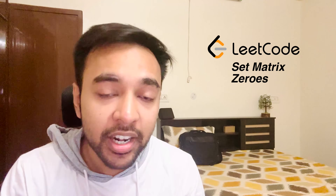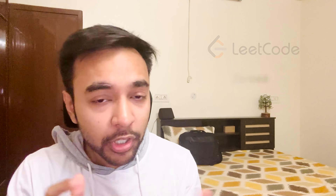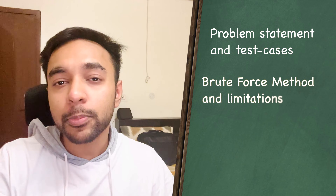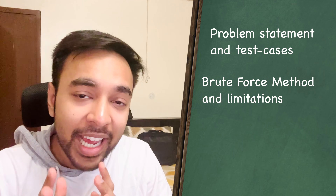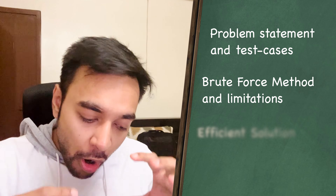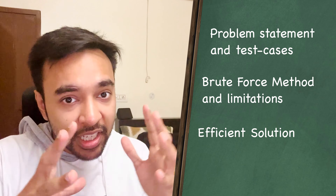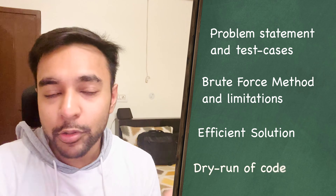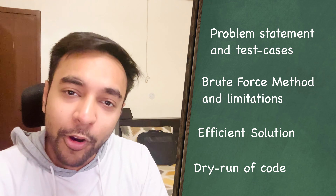Today's problem is Set Zeroes in a Matrix on LeetCode. You're given a matrix and you have to set zeros in rows and columns based on a certain condition. Hello friends, welcome back to my channel. I will explain the problem statement and we will look at some sample test cases. Going forward, we will try a brute force approach and see its limitations, then optimize it step by step — first for time, then for space. We will also do a dry run of the code so you can understand how it all works in action.